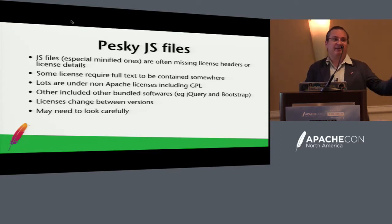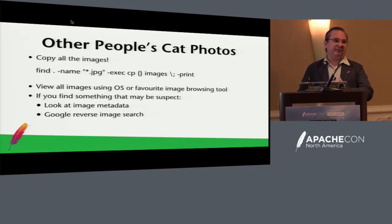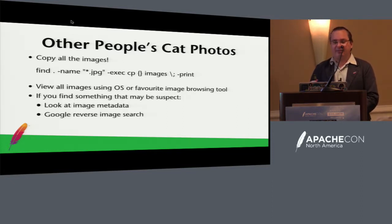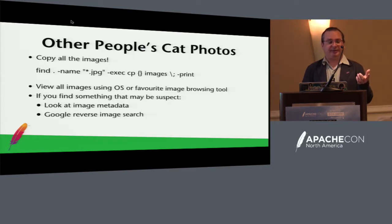jQuery and Bootstrap are two that bundle other stuff inside them. I had to vote minus one on a release once because it had a professional photographer's cat photo in it — they just wanted a big photo that they liked. You can't take something you don't have permission to distribute and include it in a release. What I generally do is copy all the images into a folder, view them as icons and see what's there. If anything jumps out, a Google reverse image search will find it for you straight away.